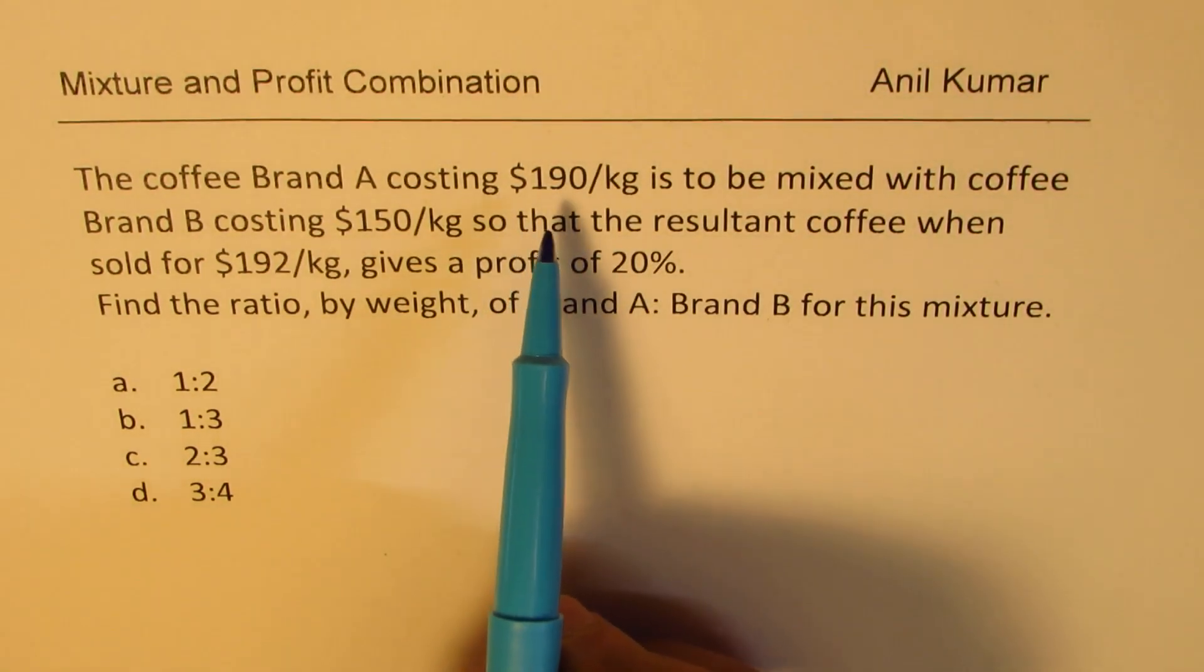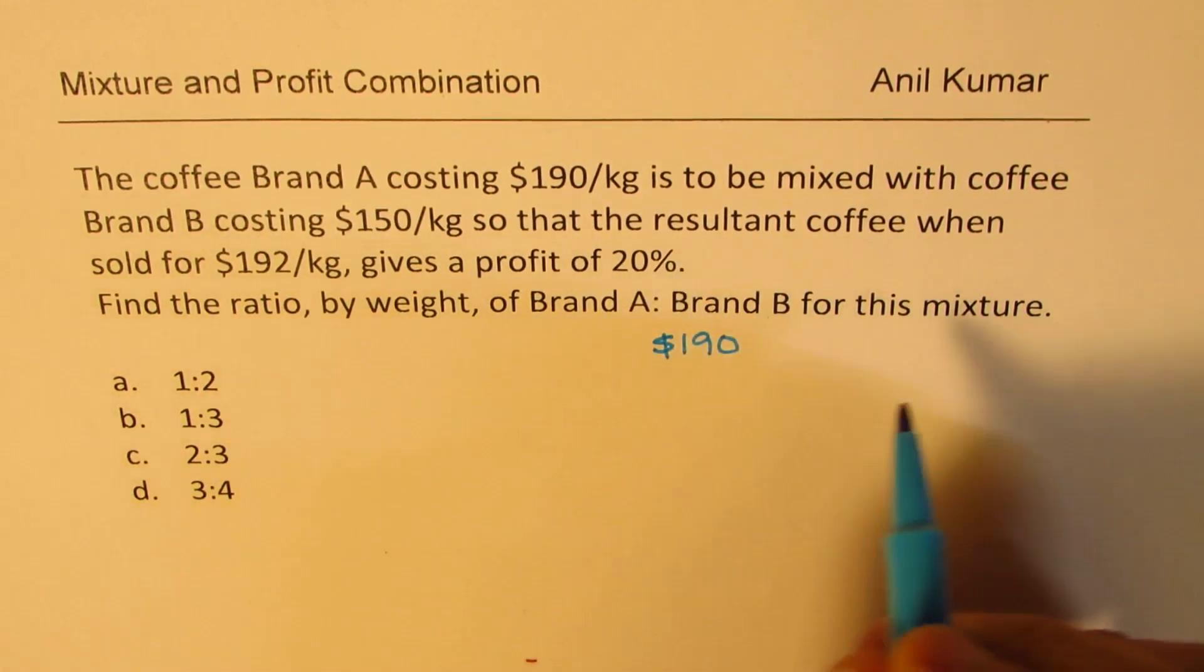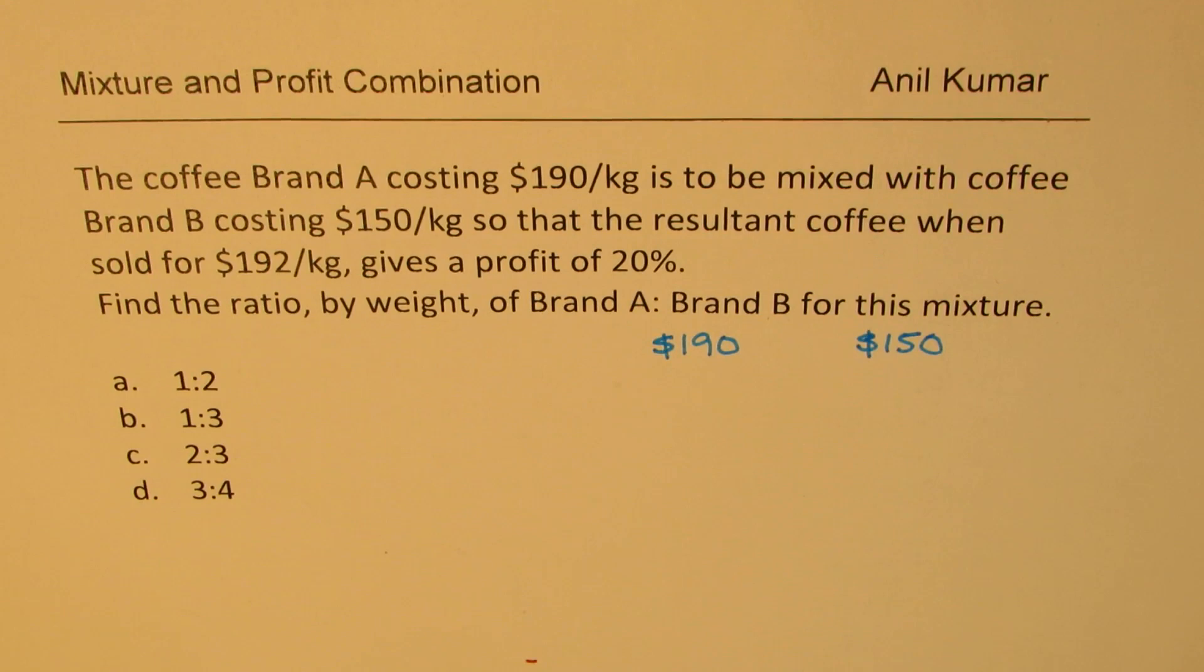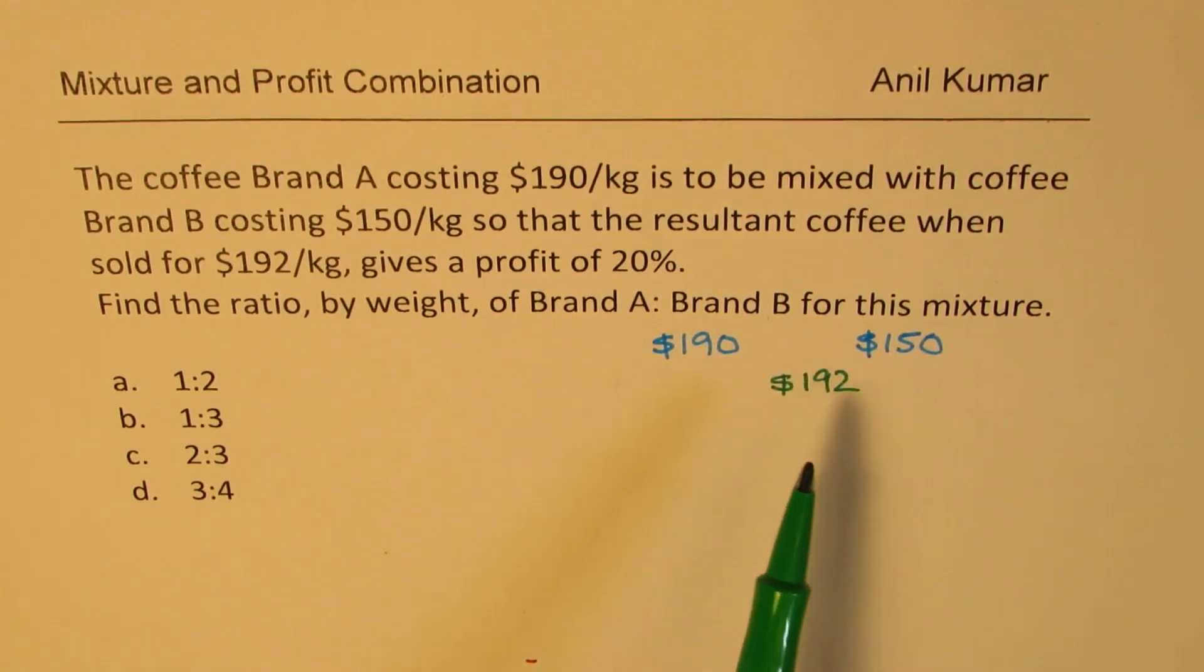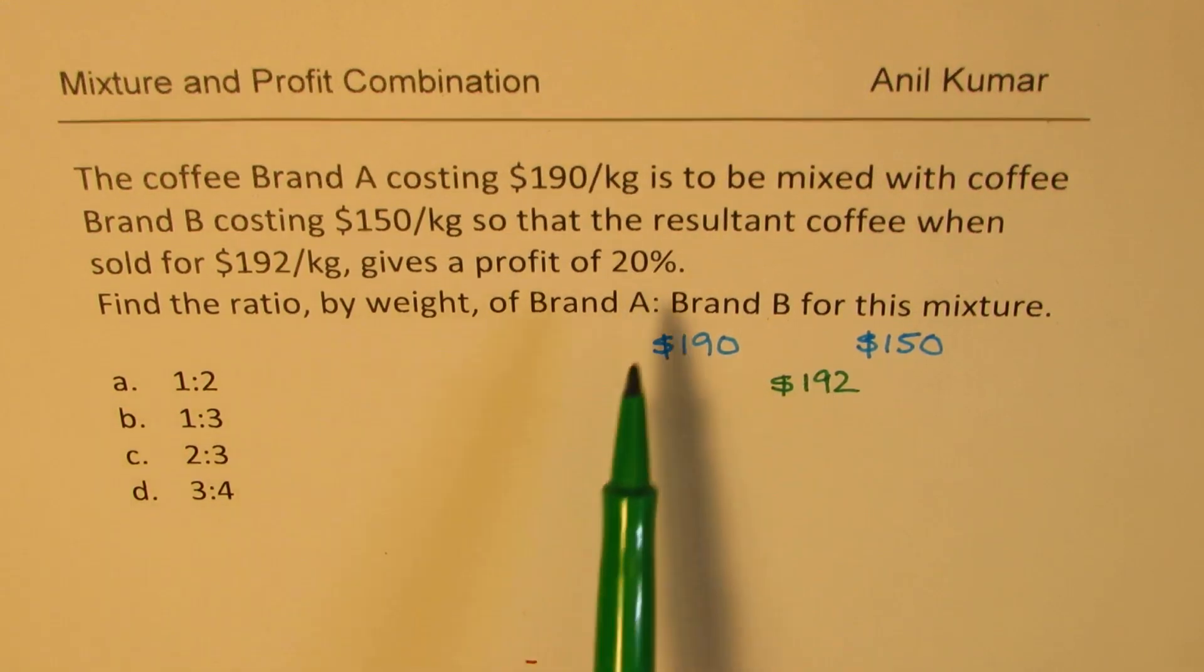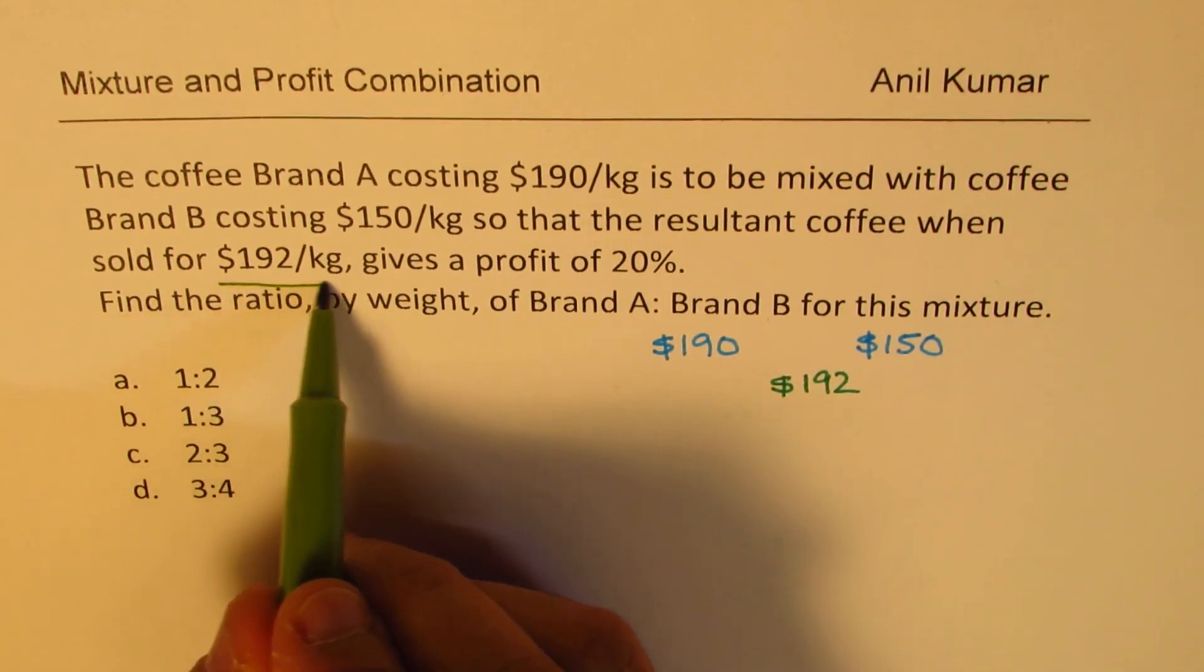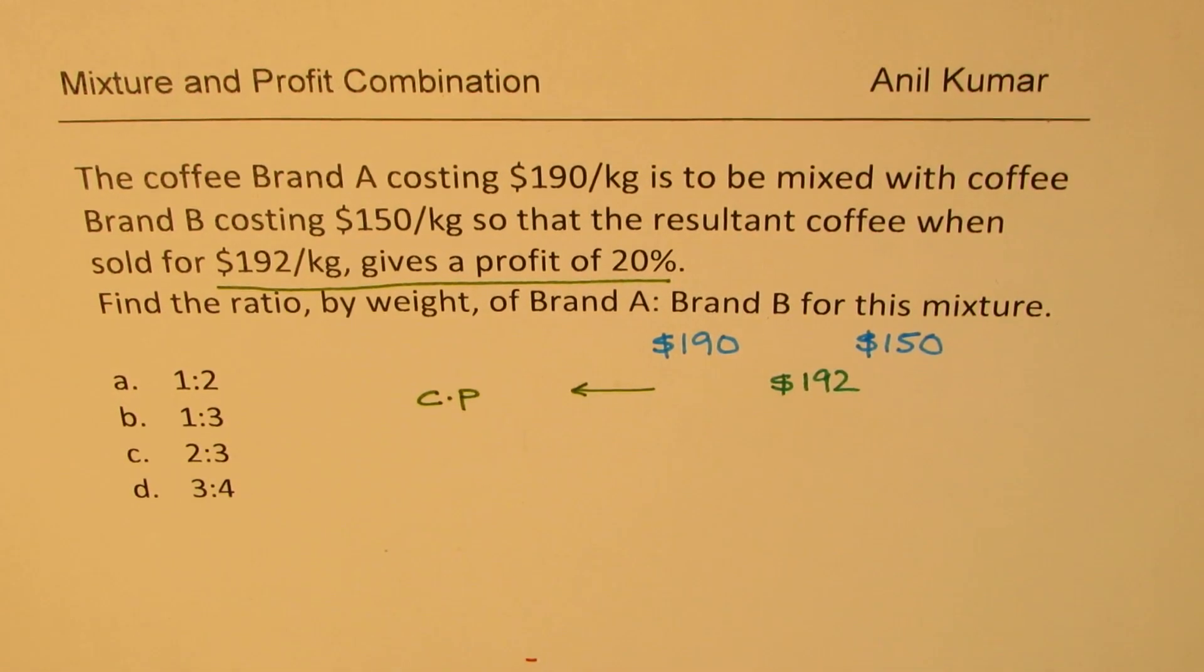When you read the question we are clear that there are two brands of coffees. One is $190 and the other one is cheaper which is $150 and what you get as your final price is $192. We are also given that this price is actually 20% profit. When you are going to sell after all this mixture you are expecting a profit of 20% then it means we have to find the cost price. Profit is on the cost price, correct?